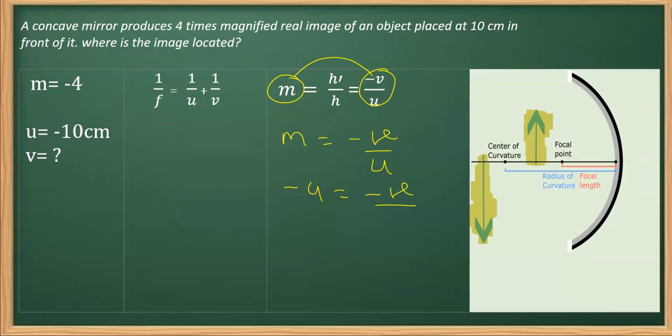As you can see, the object distance is minus 10, so we'll replace this u with minus 10. These two minus signs get cancelled, and with cross multiplication we are getting v as minus 40 centimeter.